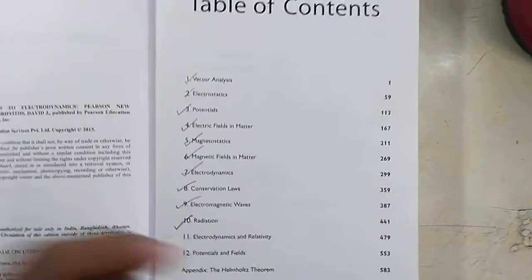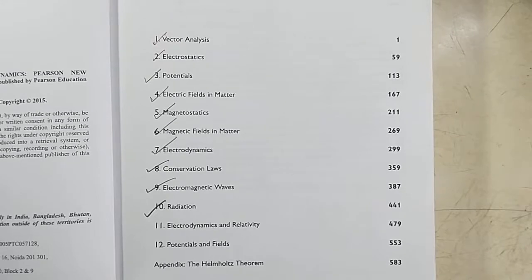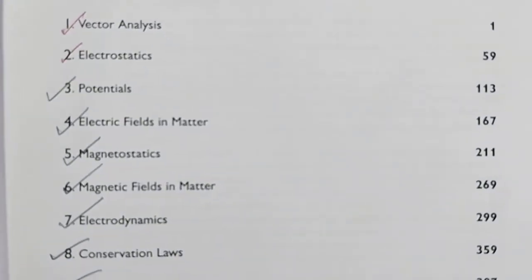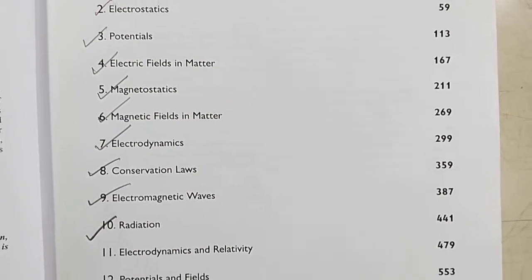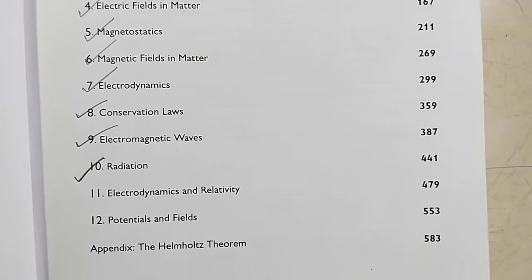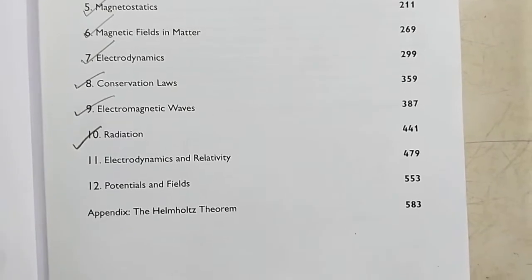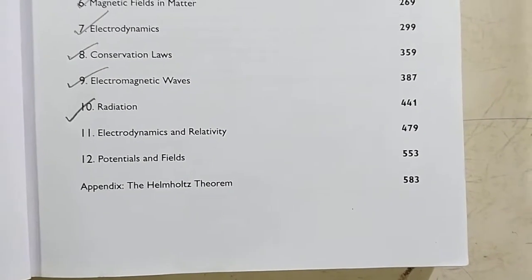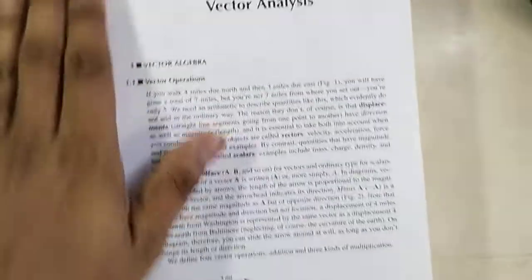So let's see what are the contents of this book. First, here are the contents: vector analysis first chapter, then electrostatics, then potential and electric fields in matter, then magnetostatics, magnetic fields in matter, then electrodynamics, conservation laws and electromagnetic waves, radiation, electrodynamics and relativity, then at last potentials and fields. I'm going to show you the first chapter.